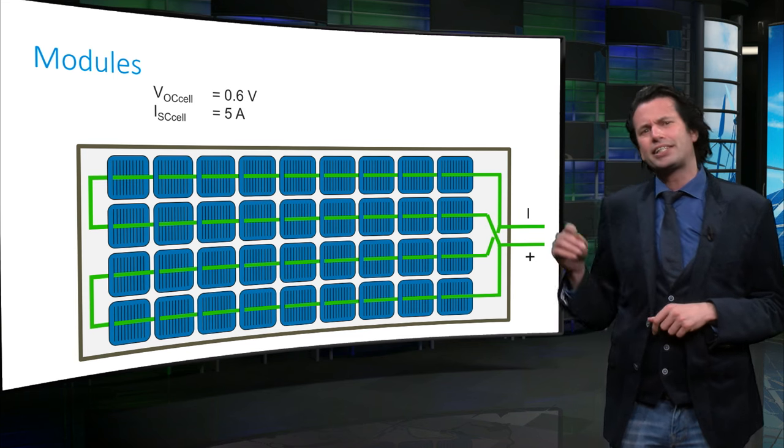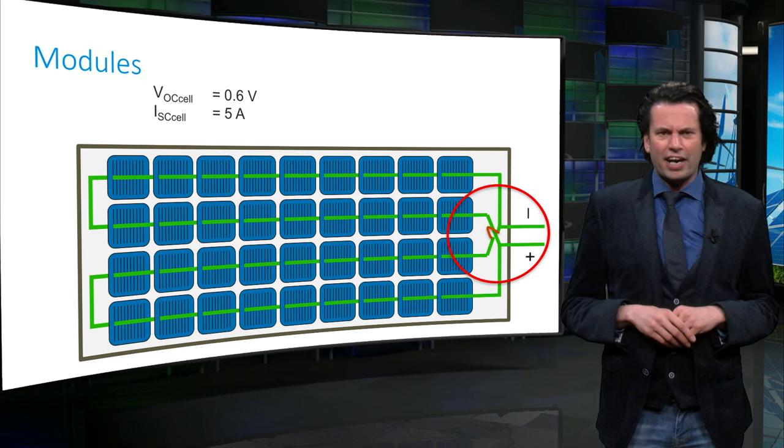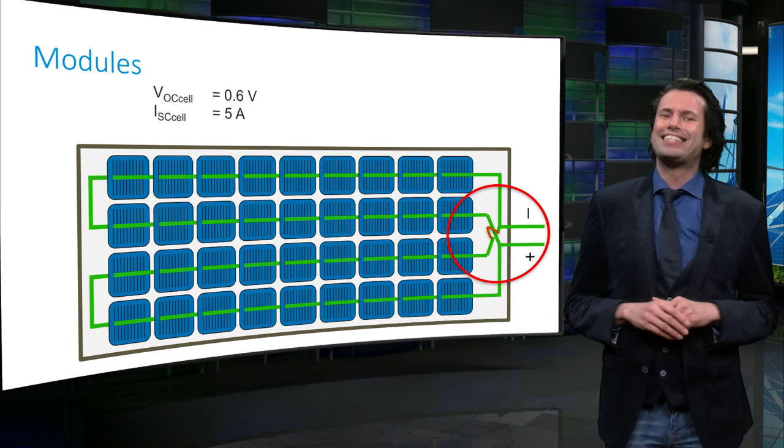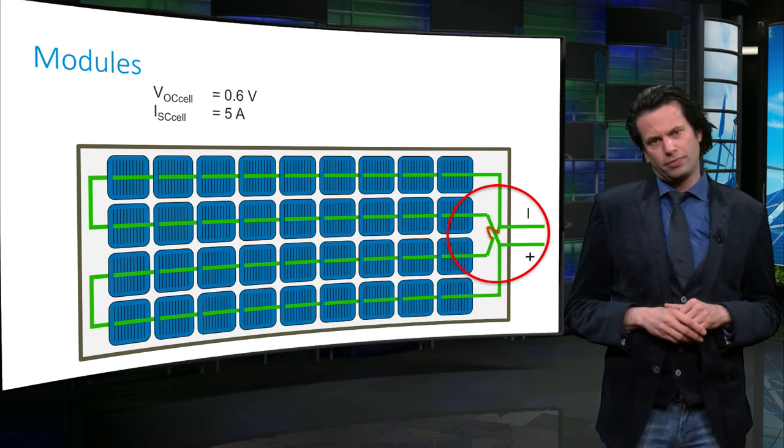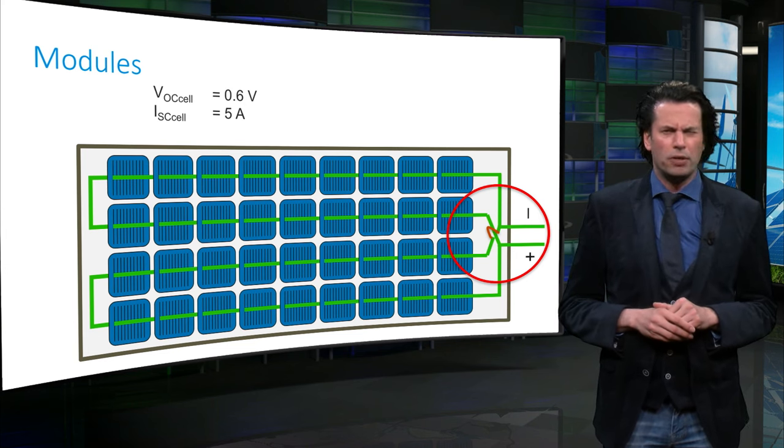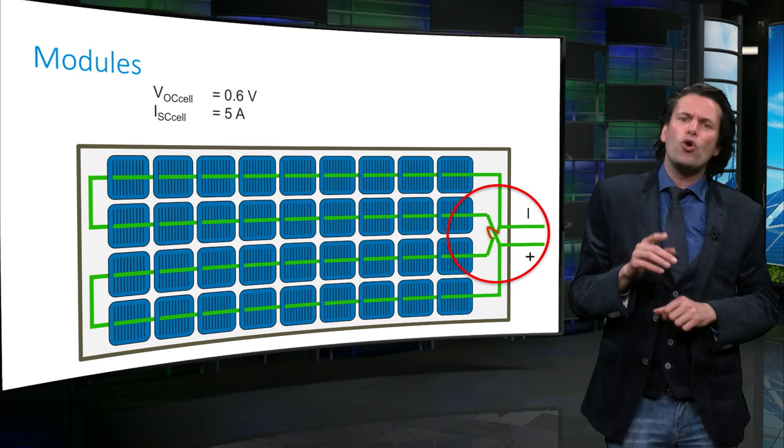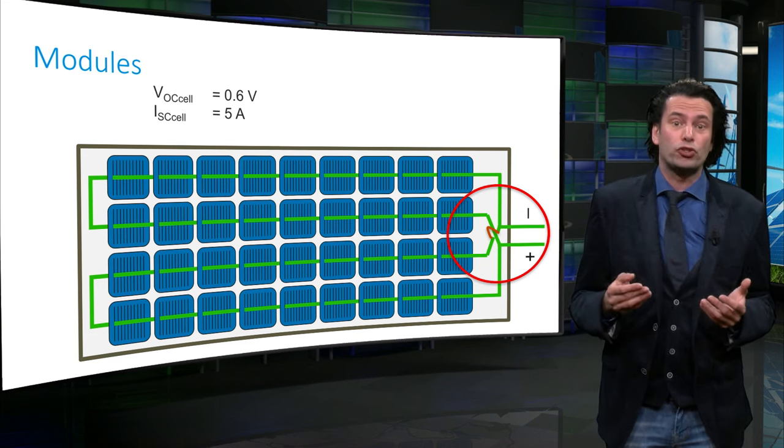Now let's change the arrangement a bit in the module. There are now two rows of 18 cells in parallel. The voltage across the two rows should be equal. But how do we calculate that? Well, that's easy. We now only have to multiply the voltage of one cell, which is 0.6V, with the number of cells that are connected in series, which is 18.